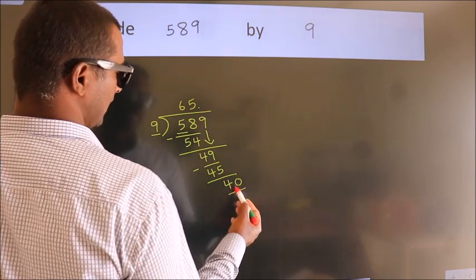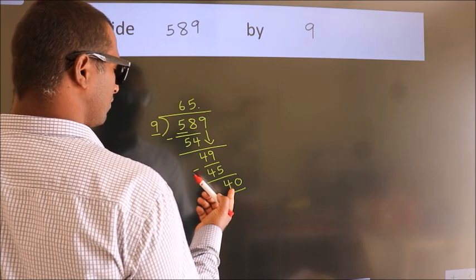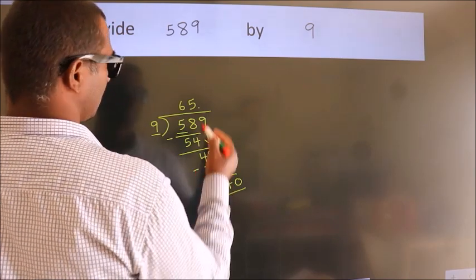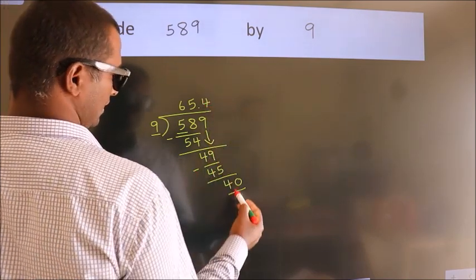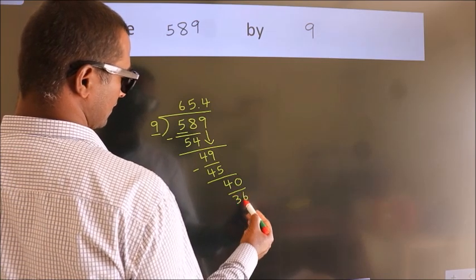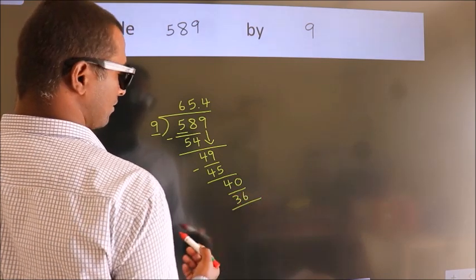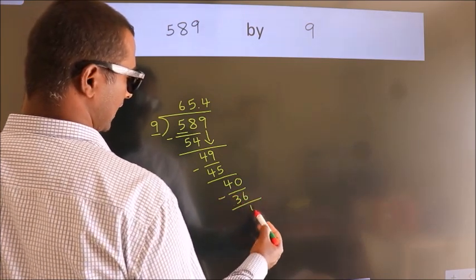So 40. A number close to 40 in the 9 table is 9 × 4 = 36. Now we subtract. We get 4.